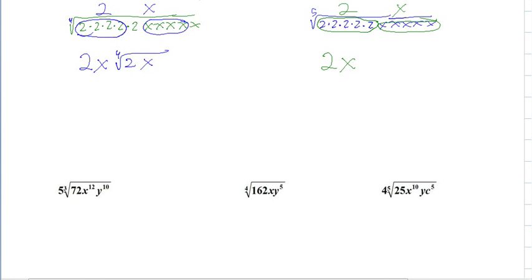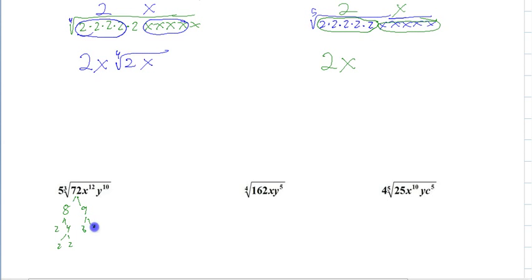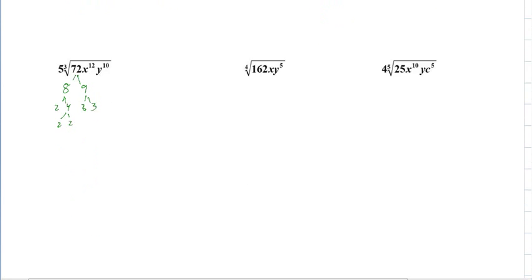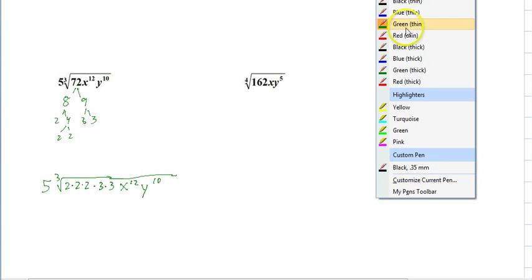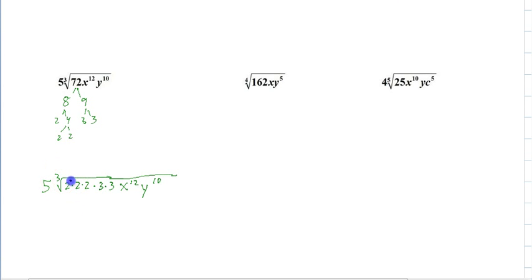Let's try one more — we're going to do it the quick way. I have to expand 72, and that is 8 and 9: 2 and 4, 2 and 2, 3 and 3. So now let's write it: cube root of 2 times 2 times 2 times 3 times 3. And I'm going to use the division method because I don't want to write out 12 x's and 10 y's. So let's circle our groups of 3.